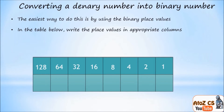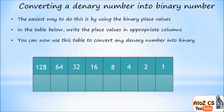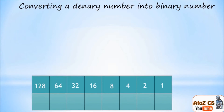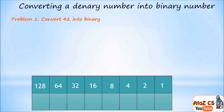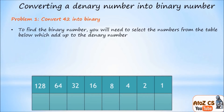You can now use this table to convert any eight-bit denary number into a binary number. Let's look at the first problem: convert 42 into binary.